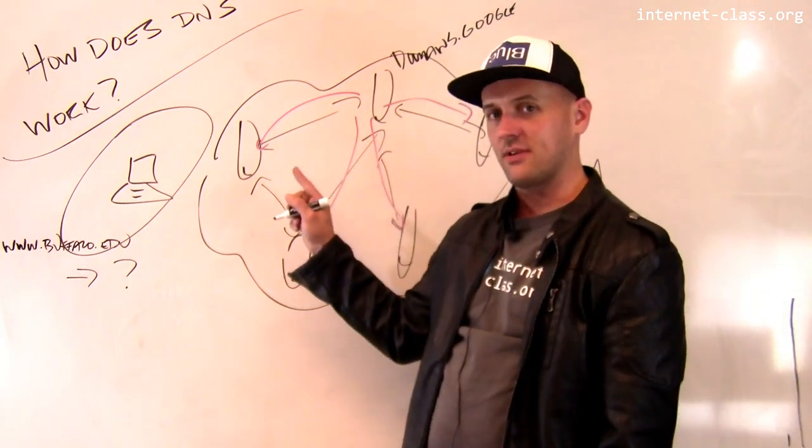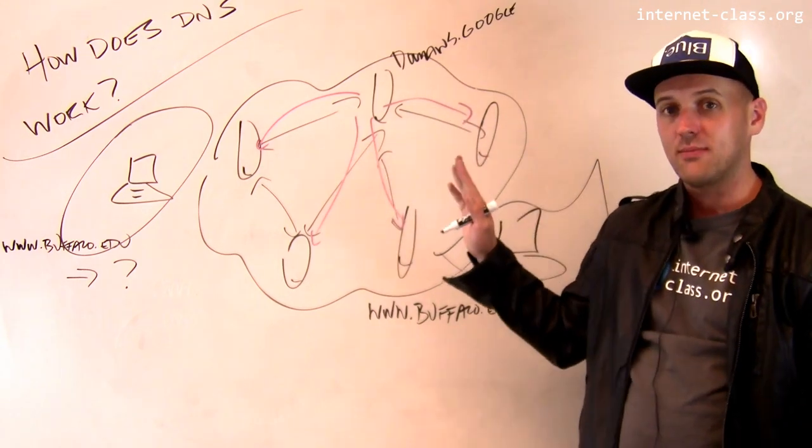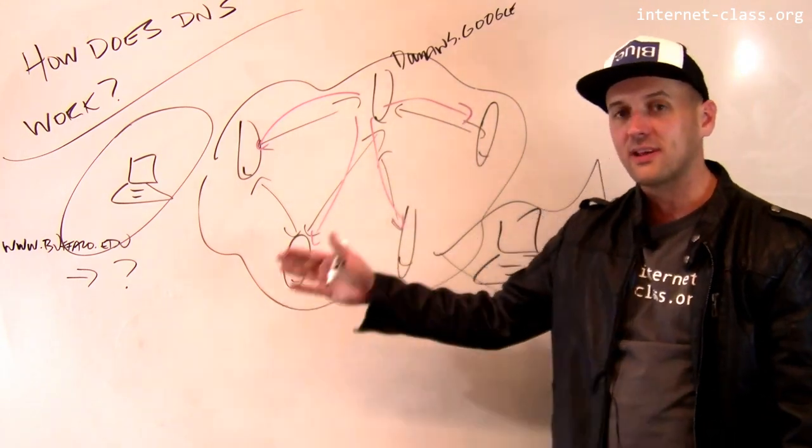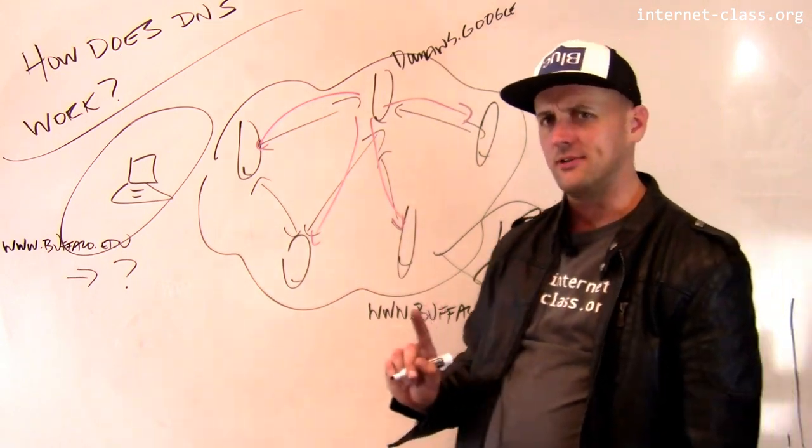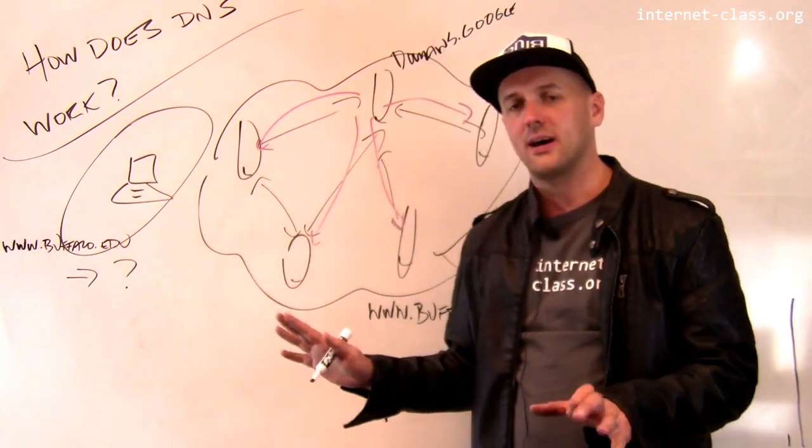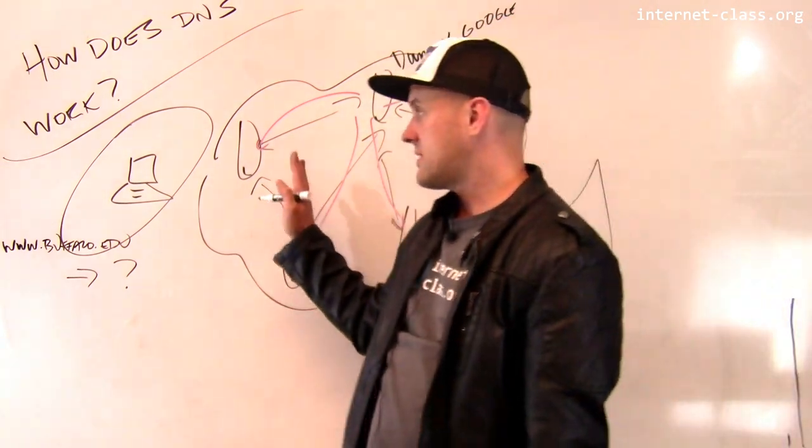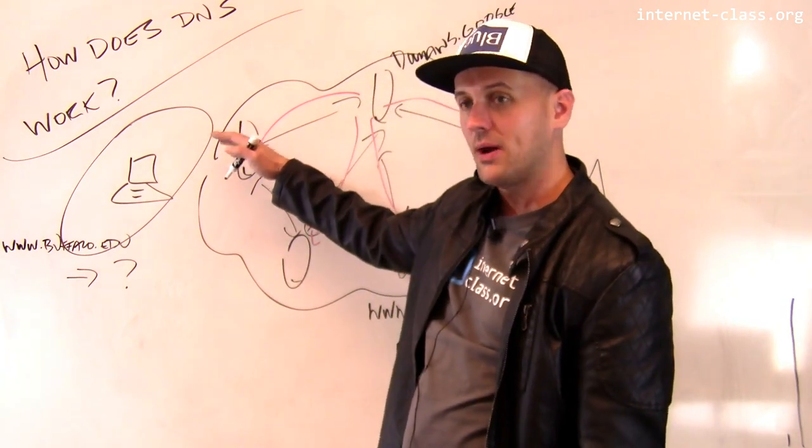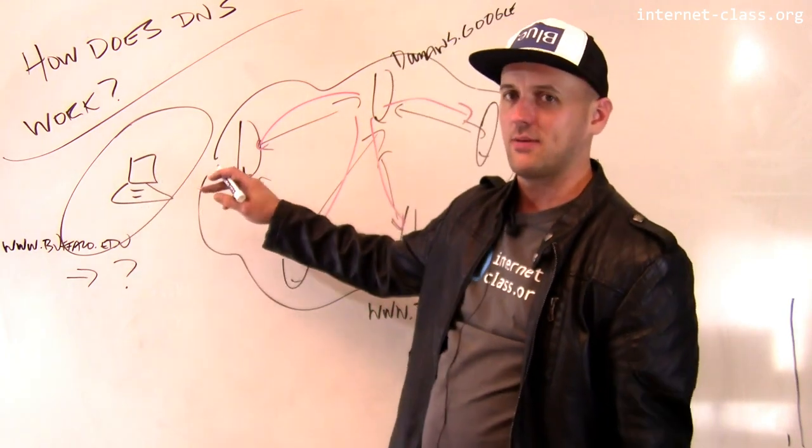So one of the ways that the domain name service addresses this is it allows people that register domain names to translate them differently depending on where the request is coming from. So what Buffalo might do, and I don't think we do do this, but what Buffalo might do is it might say, I'm going to sign up with what's called a content delivery network or a CDN. And what they're going to do is they're going to host the resources from my website on some web server that might be in Japan or it might be in Asia somewhere.